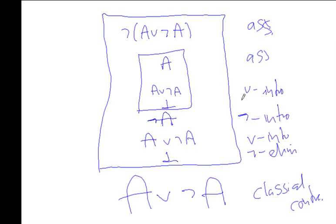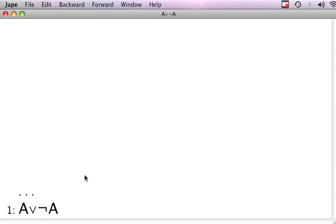So now the whole proof is actually justified. So you can see we can prove the excluded middle, we can prove A or not A. We can use that to prove that by use of the classical contradiction rule.